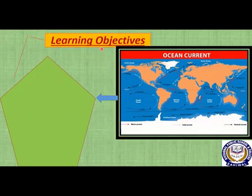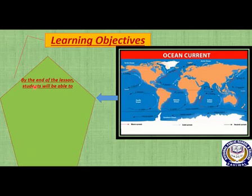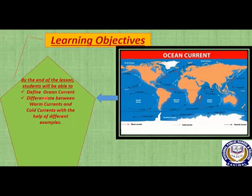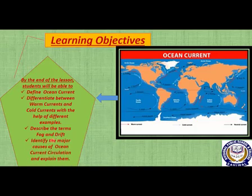Learning objectives of today's lesson: By the end of the lesson you will be able to define ocean current, differentiate between warm currents and cold currents with the help of different examples, describe the terms fog and drift, identify the major causes of ocean current circulation, and explain them.